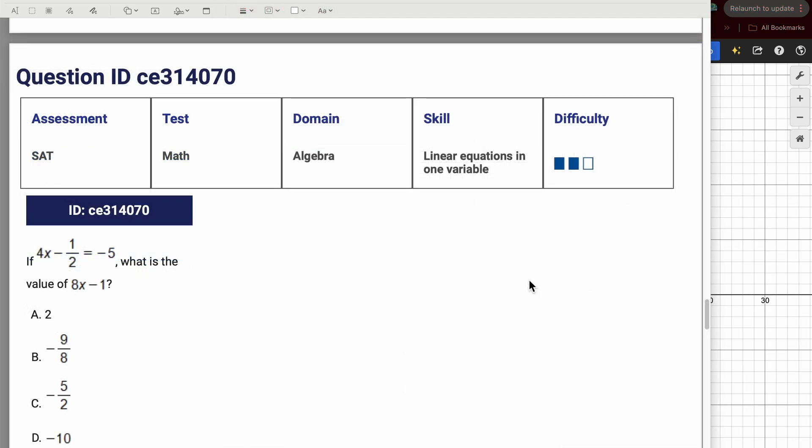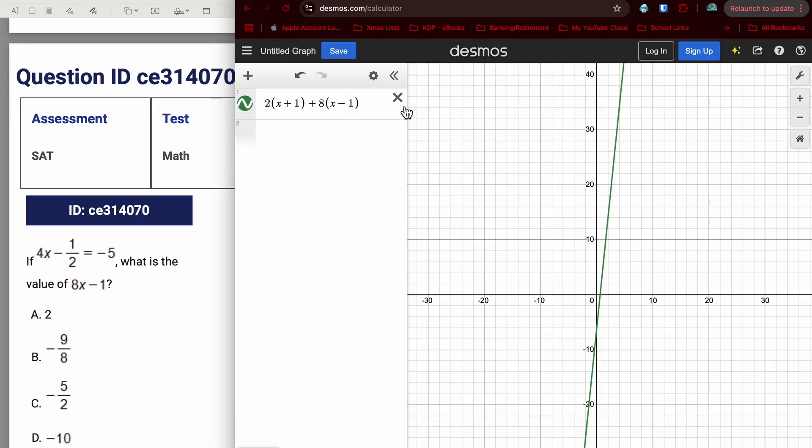This SAT math question, very similar to one that we had done earlier, again, could be done by hand. But the question is, how fast are you and how accurate are you? So if you want to use Desmos, you might as well take advantage of it. That one half in there also sometimes scares people. So Desmos is going to work just fine. I need to solve this equation, solve it for X, and then take X and plug it back into this 8X minus one.